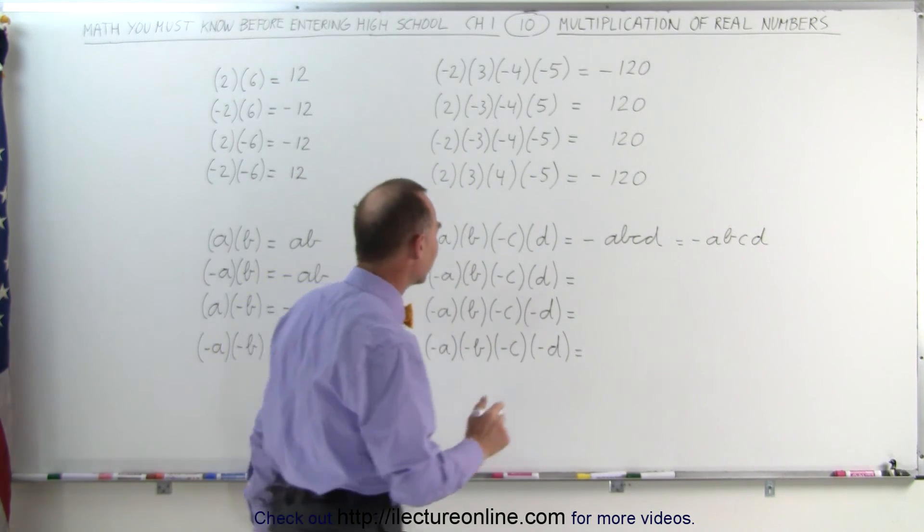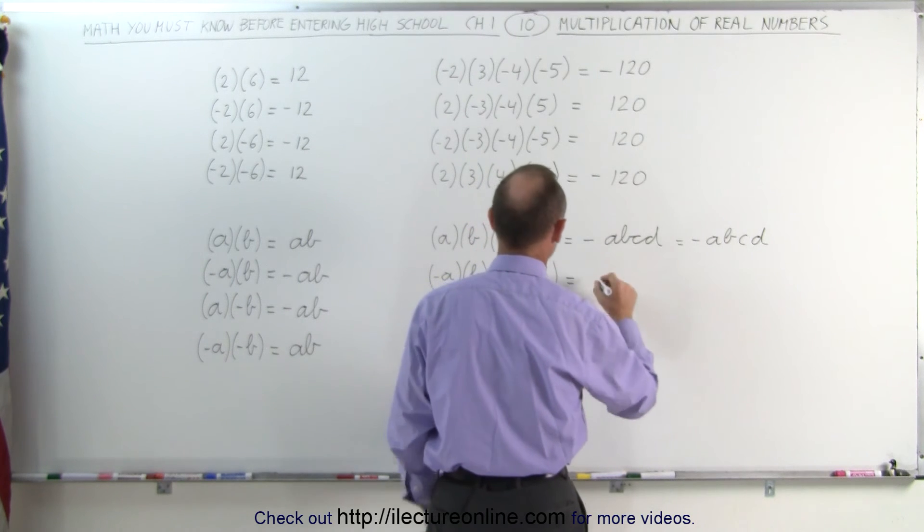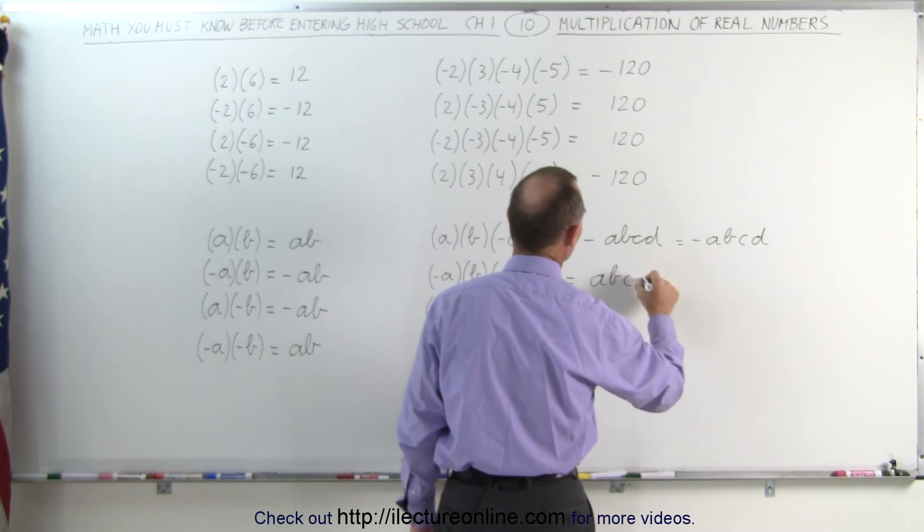Here, when there's two negative signs, two negative signs multiplied together give you a positive. This is abcd.